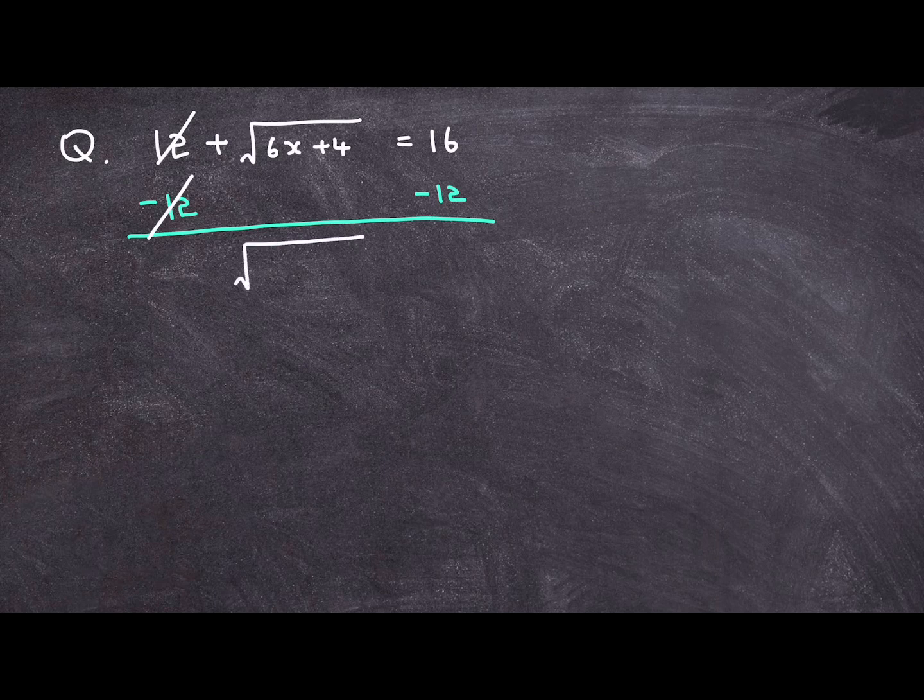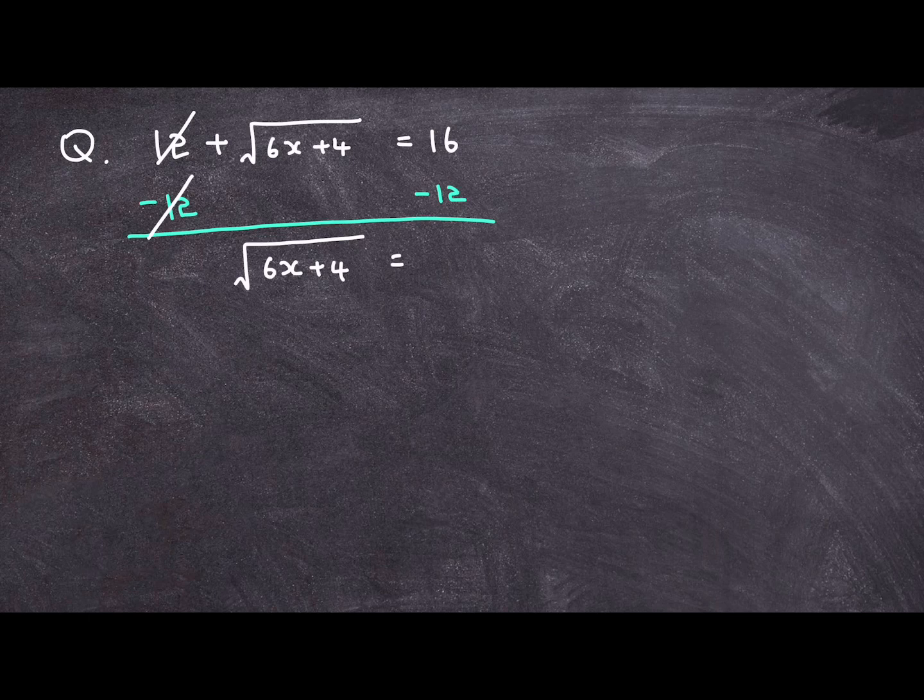And I'll get square root of 6x plus 4 is equal to 16 minus 12, which is equal to 4.